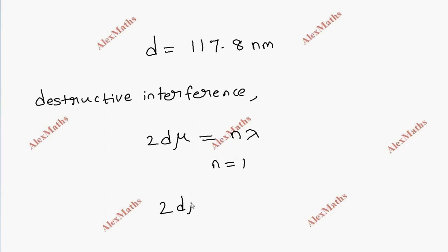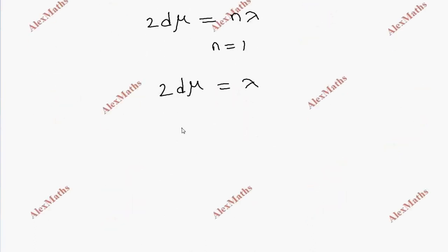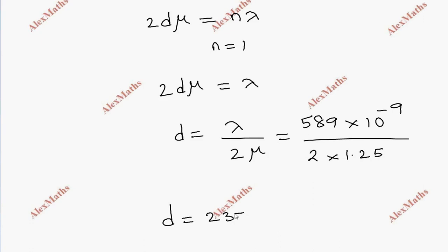So 2d mu equals n lambda, which gives d equals lambda by 2 mu. Substituting values, this is 589 into 10 power minus 9 divided by 2 into 1.25. Simplifying, the value is 235.6 into 10 power minus 9 meter, that is 235.6 nanometer.